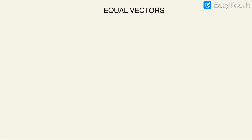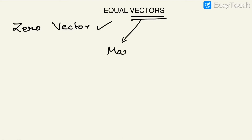We had already discussed the zero vector. Now we are going to learn about equal vectors, which is a very short and simple topic. You already know what a vector consists of — it consists of two things: magnitude and direction.